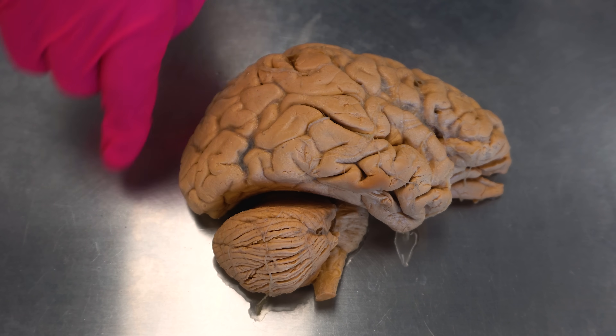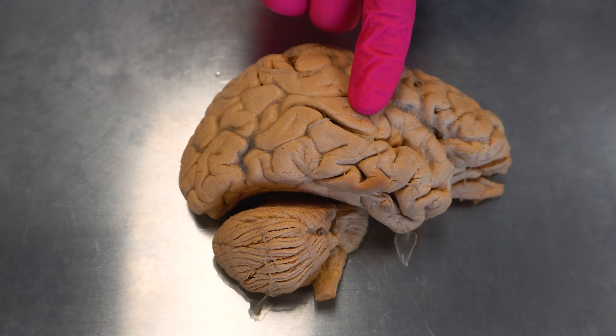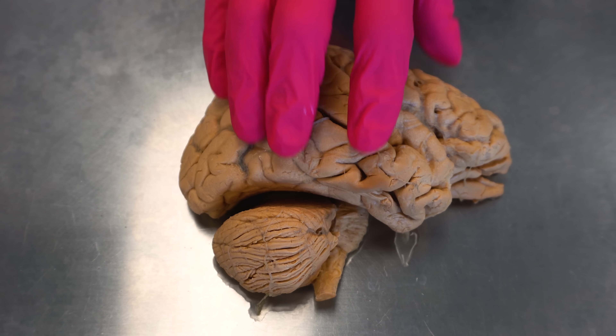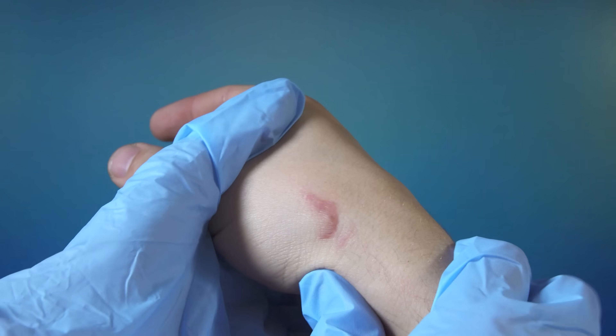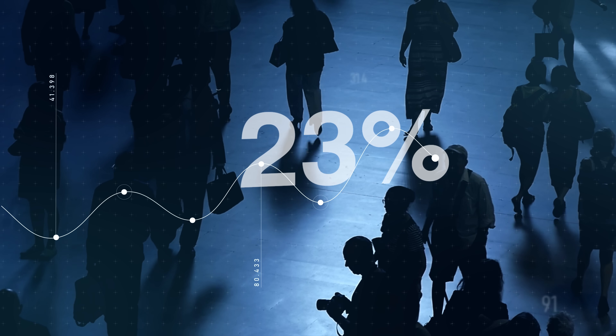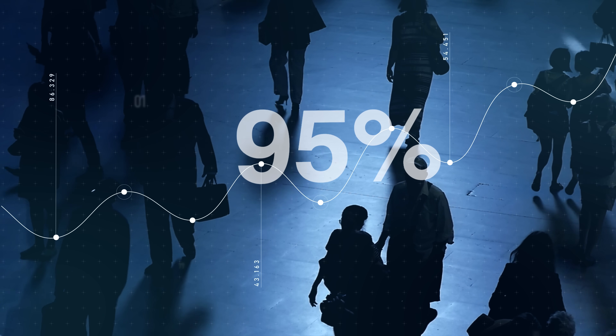The rabies virus is neurotrophic, meaning it's specifically adapted to attack the nervous system, and we'll see that it does a number on the brain. This plays a big role in why it's so difficult to treat. As a teaser: if symptoms have already started, only a handful of people have survived the infection, which is why rabies is commonly described as being nearly 100% fatal once symptoms develop. That's why timing of treatment is so important.